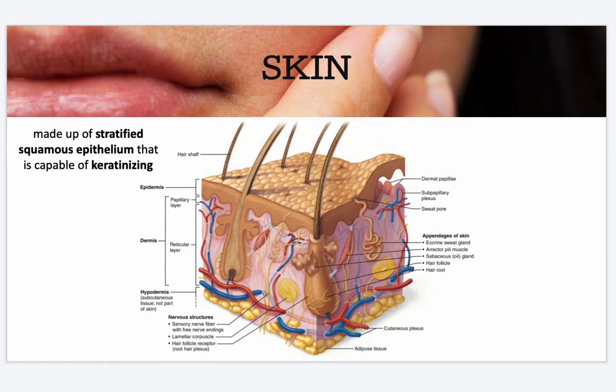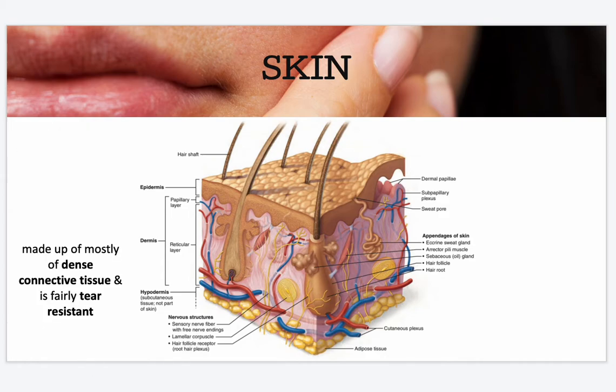Your skin is made up of stratified squamous epithelium that is capable of keratinizing, which means it can be tough. Your skin is also made up mostly of dense connective tissue and is fairly tear resistant.